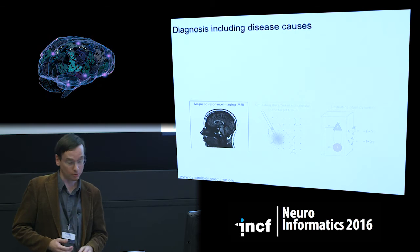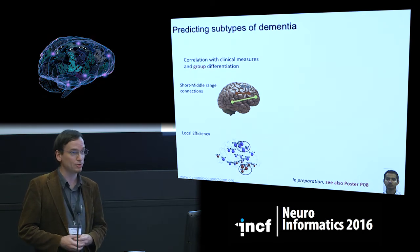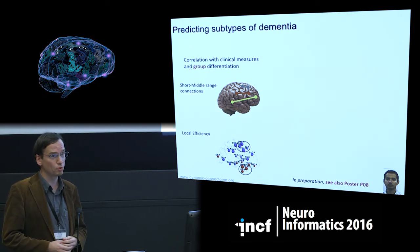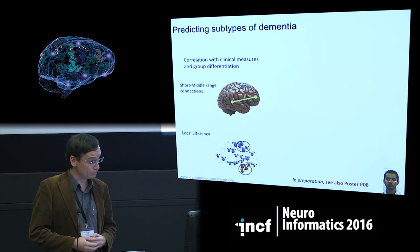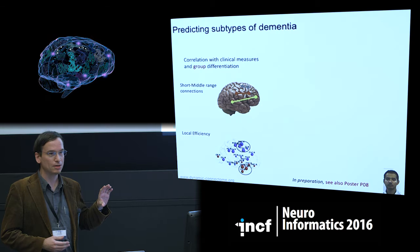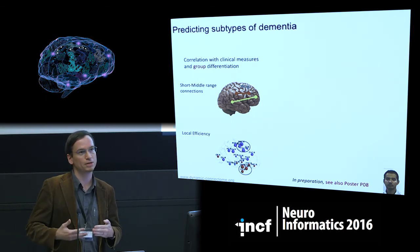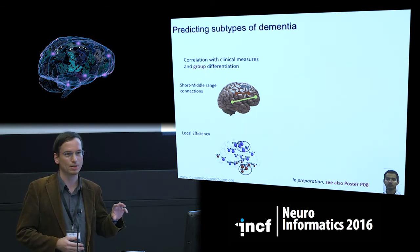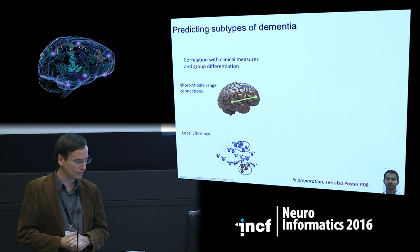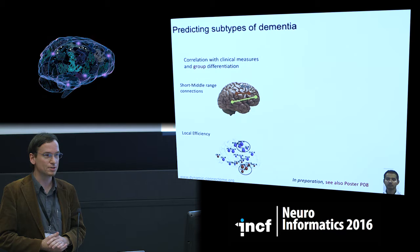Starting with diagnosis, we can look at different subtypes of a disease. An example from our lab is looking at subtypes of dementia. At the group level, we look at functional connectivity and see two distinct changes between Alzheimer's disease and Lewy body dementia. Alzheimer's is more frequent; Lewy body is another type, but at early stages symptoms are quite similar, making it difficult to distinguish.